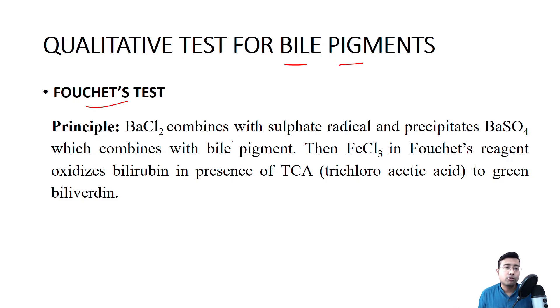Let's look at the principle. What happens in case of Fouchet's test? Barium chloride combines with sulphate radical and precipitates barium sulphate, which combines with bile pigments. So in the first step of the reaction, barium chloride will combine with sulphate to form BaSO4 and that BaSO4 will bind with the bile pigment that is present in the urine.